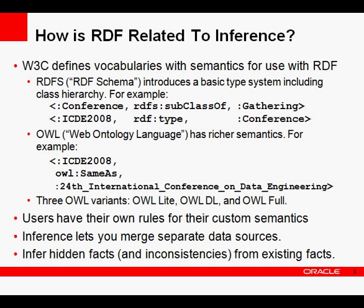The other interesting thing is you can infer hidden facts from your existing facts. Facts can contradict each other — there are OWL facts that are contradictory. So if these hidden facts contradict some other facts that you have, that's a sign that you have hidden inconsistencies in your explicit data.